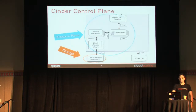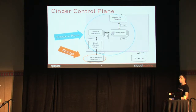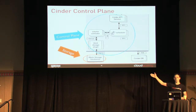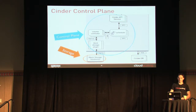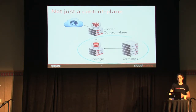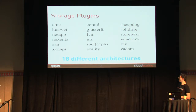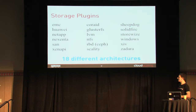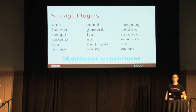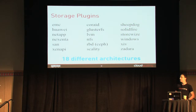We have a control plane, and all these pieces are scale-out — it's designed for scale-out. But then what we do is plug in to different block storage solutions. In Cinder, these are mostly controlled by various vendors, and we have 18 different architectures in which you can actually deploy Cinder. So Cinder isn't a solution — Cinder is 18 different architectures and 18 different solutions.